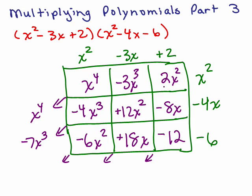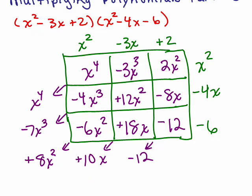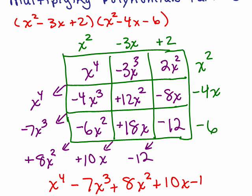We've got 3 terms for x squared: 2 plus 12 minus 6, giving us 8x squared. Then negative 8x and plus 18x gives us plus 10x — be careful to put your sign in front. And there's only one constant, negative 12. So these 5 terms together give us x to the fourth minus 7x cubed plus 8x squared plus 10x minus 12. That's just the method you used to get the answer; now we write the final answer.